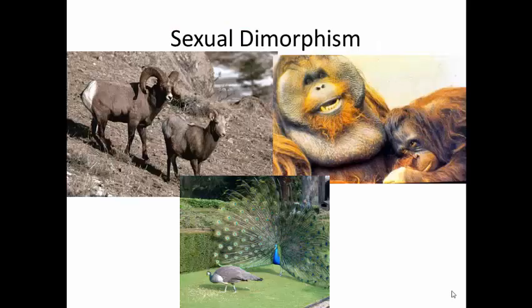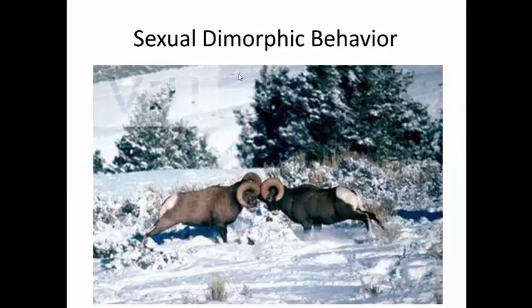Most animals, including humans but not as much, show a sexual dimorphism — meaning two forms — especially in things like the peacock, orangutans, and sheep. They have a difference between males and females, but you also see sexual dimorphic behavior, which can be influenced by the season and by the development and production of certain types of hormones. Sheep get along all year long until it's mating season and then they start pounding their heads against each other.